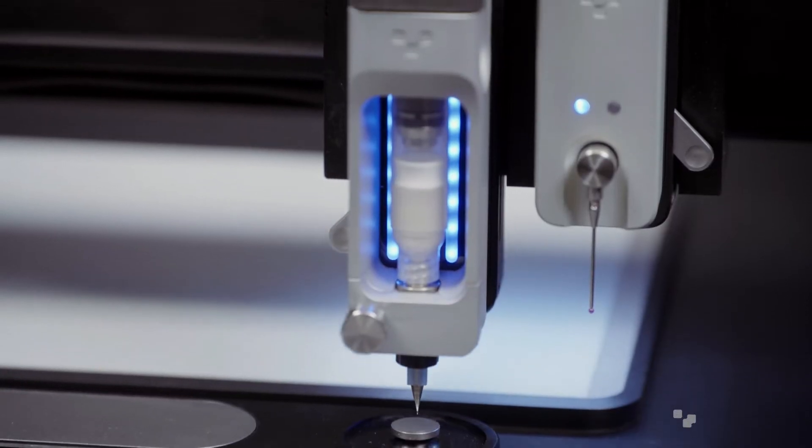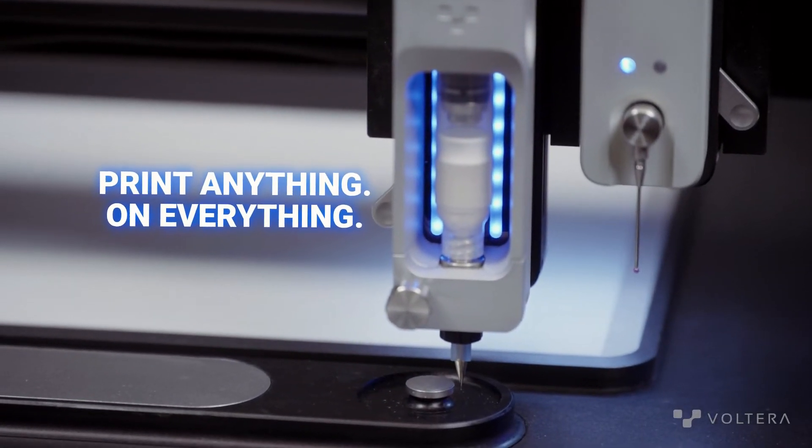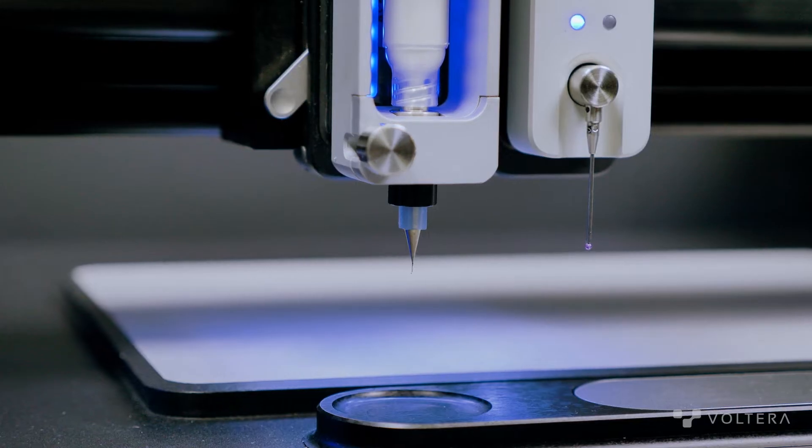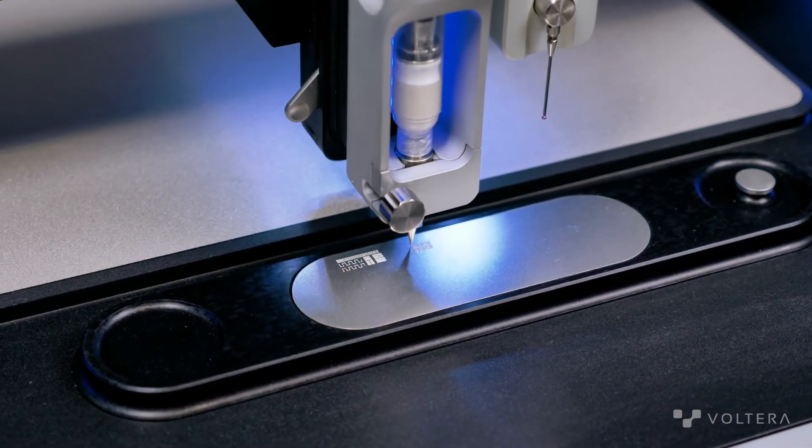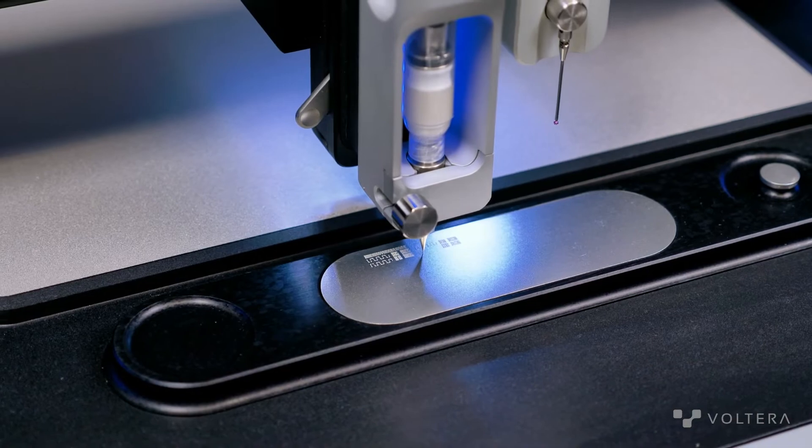NOVA allows you to print anything on everything, as long as it has a viscosity of 1 to 200 pascal seconds or kilocentipoises for the engineers out there. If you're working with a new type of ink altogether, you'll want to run through the calibrate procedure first, so make sure you check out that video. Let's get started!